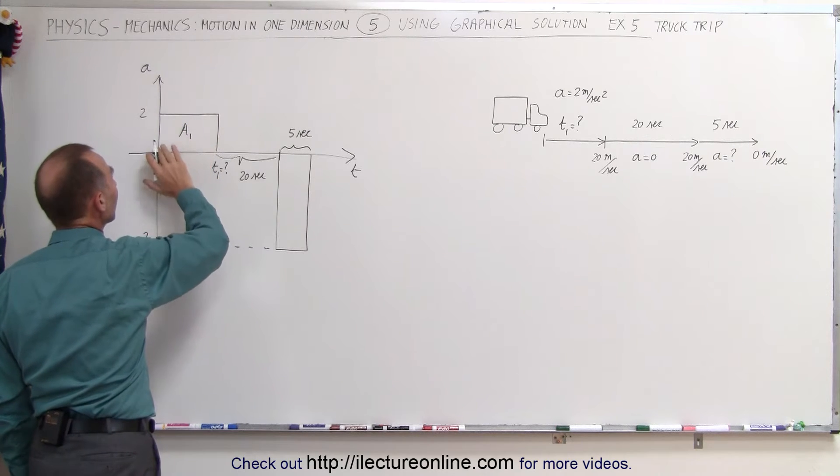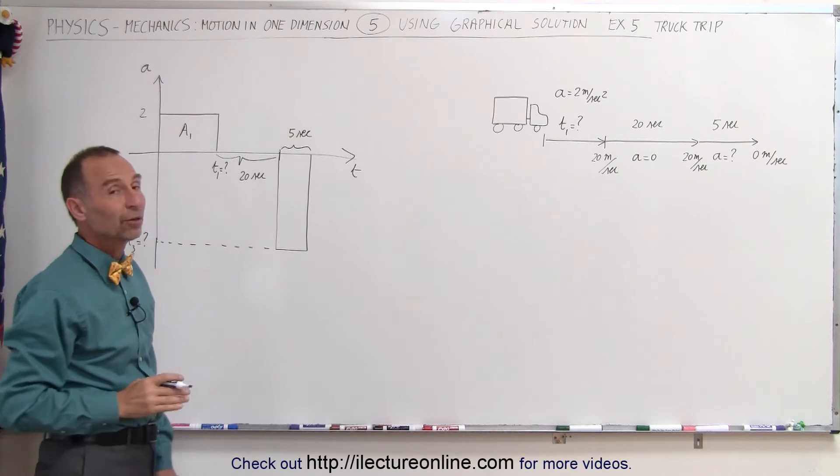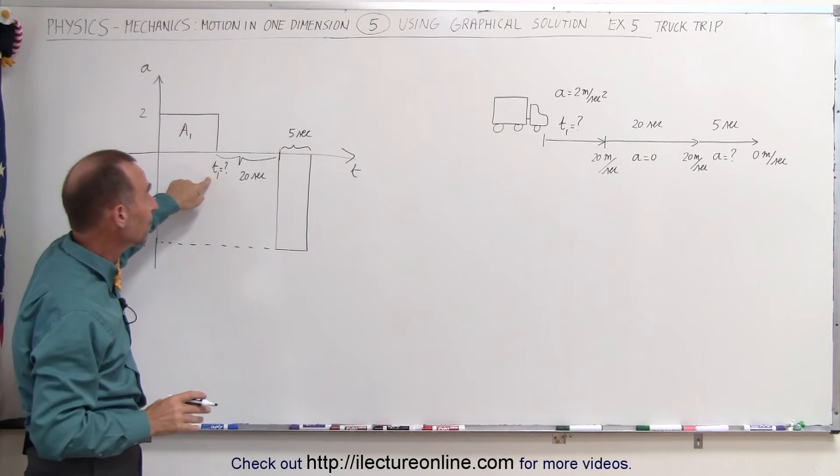let's call it a1, represents the velocity gained during that period of time when it goes from 0 to 20 meters per second. That means the area here is 20 meters per second. That will allow us to find the time.